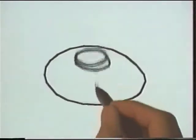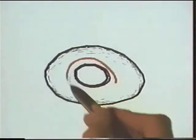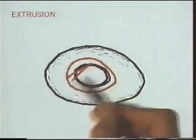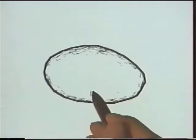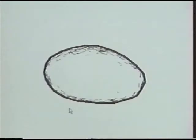If you want to remove unnecessary bumps, draw a closed stroke around it and scribble. Then the system constructs a new smooth surface.